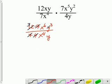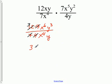So let's take a look at, now that we've simplified numbers first. And we're left with 3 x to the 6th, y cubed, all over x to the 4th, y.